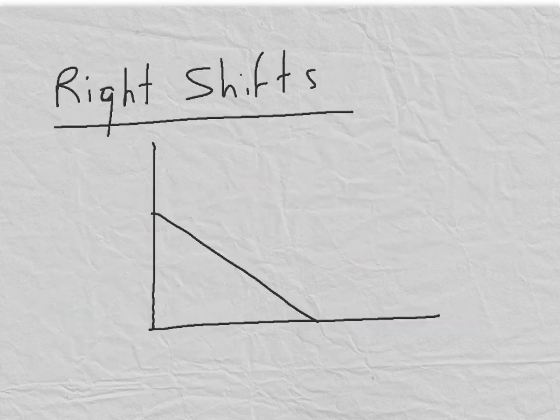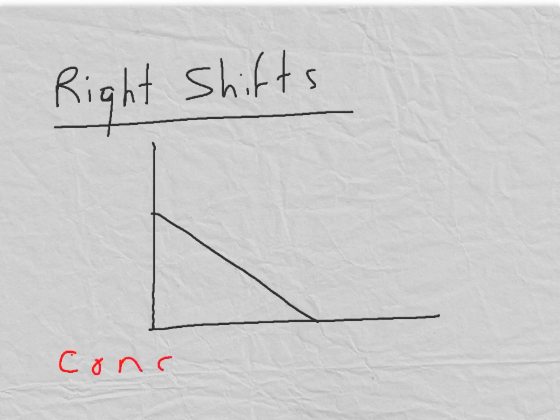So let's see what happens when one of these factors does change. This will tell us what causes a right shift in the demand curve. Let's start with a demand curve like this and assume that the income of the consumers goes up.